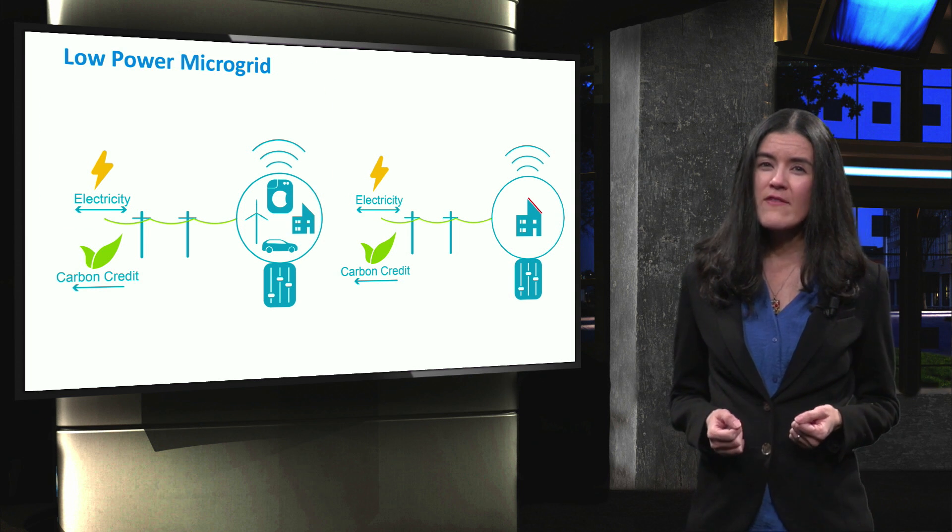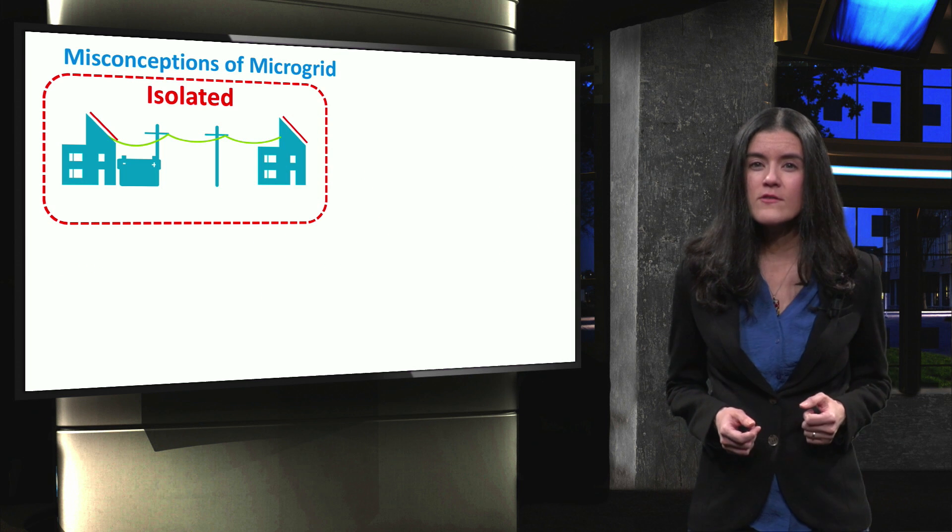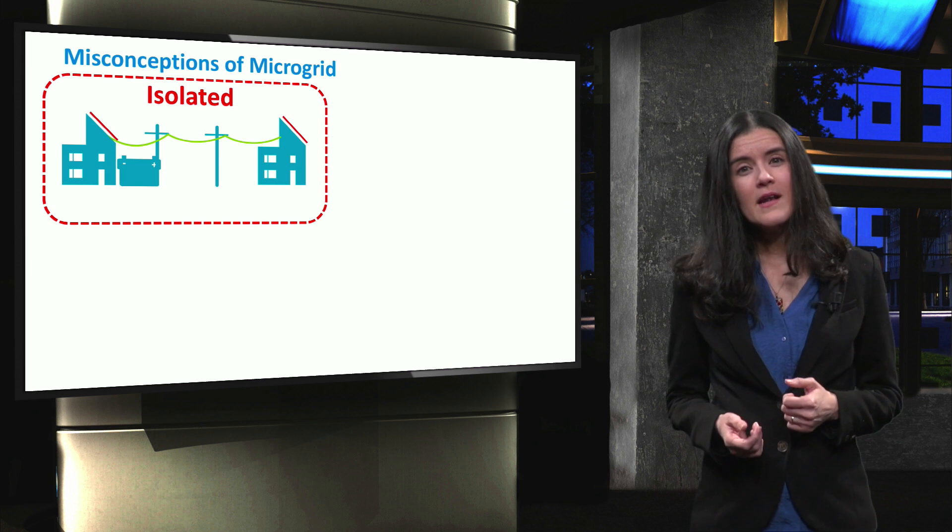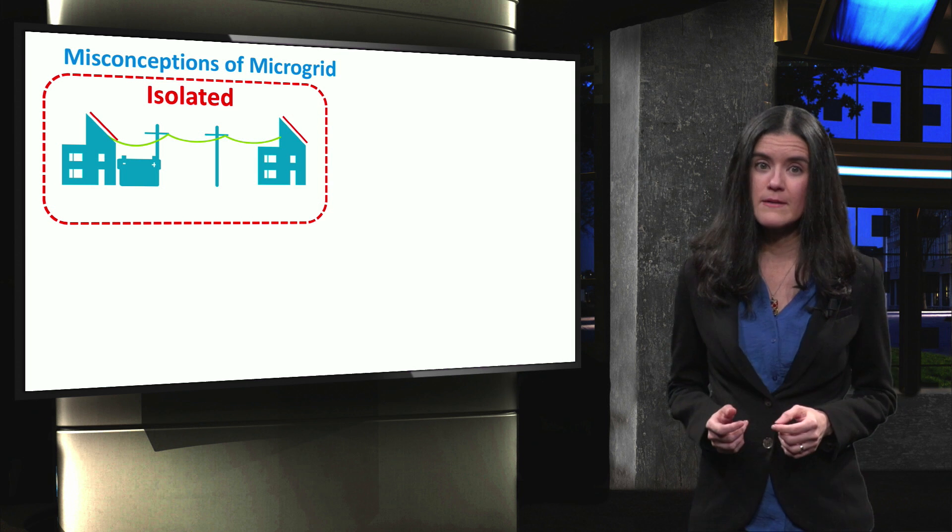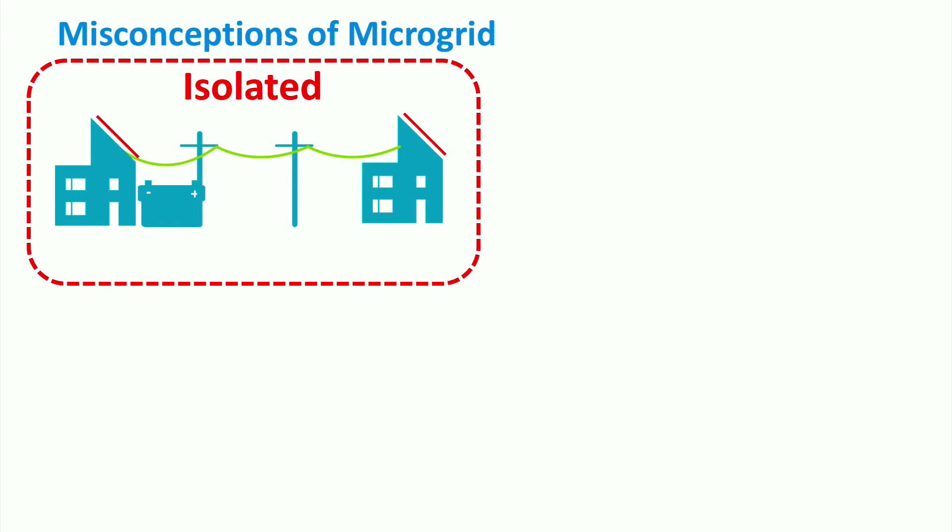Now that we have covered the different scales that a microgrid can have, let's have a look at some misconceptions that exist around the microgrid concept. First, it can be thought that microgrids are independent networks that exclusively work in islanded mode. However, as we remember from the definition, a microgrid can also operate in grid-connected mode, exchange power with it and even provide auxiliary services.